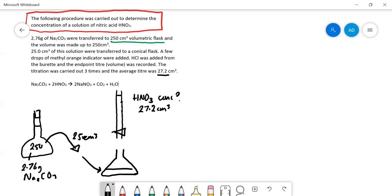Let's have a look at the equation. We've got one mole of sodium carbonate reacts with two moles of nitric acid, it's a one to two ratio, so we have to be careful with that. We're going to need two equations: concentration equals moles over volume in dm cubed, and moles equals mass over Mr.